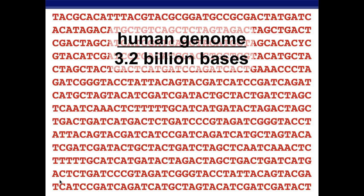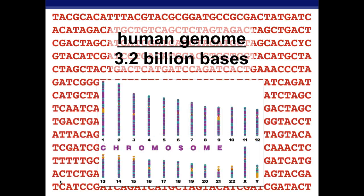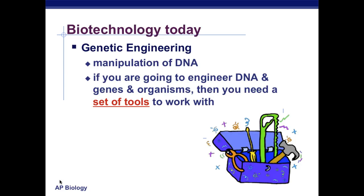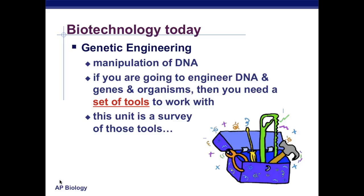The human genome has about 32 billion base pairs, and these base pairs are tightly bound up in our 23 sets of chromosomes. Biotechnology is genetic engineering — it's a manipulation of our DNA. But if we're going to manipulate and engineer our DNA, we need a set of tools. This unit is a survey of those tools and our toolkit.